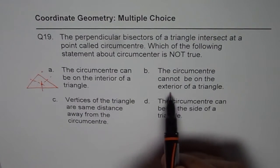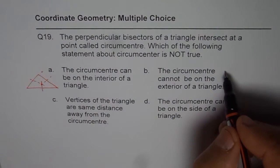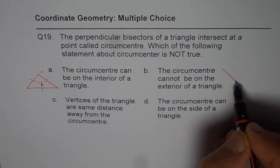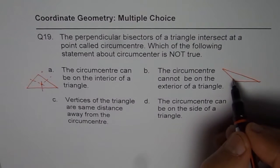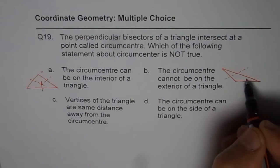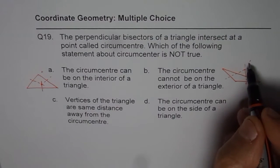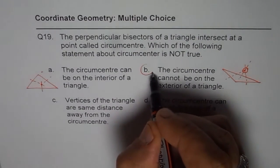Circumcenter cannot be on the exterior of the triangle. This statement actually is wrong. If you have an obtuse angle triangle, let us say a triangle kind of like this. In that case, what we notice is that the circumcenter will be outside the triangle. You see that part, right? So here is the circumcenter. So this is not true.